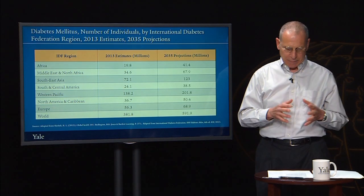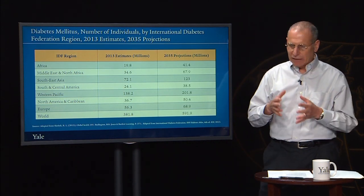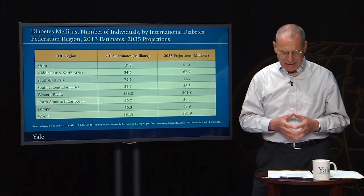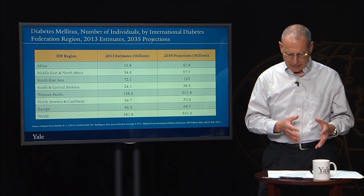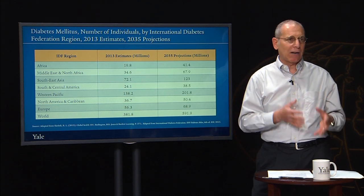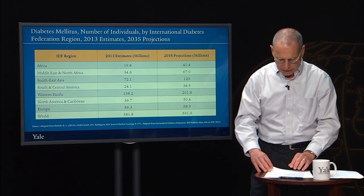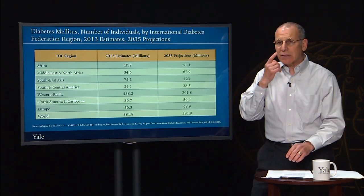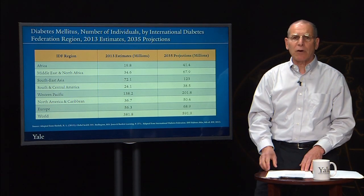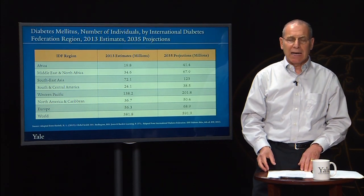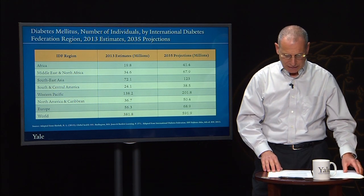In high-income countries, less educated and lower-income individuals have higher rates of diabetes than better educated and wealthier individuals. The cost and consequences of diabetes can be very high at the individual, household, and societal level.